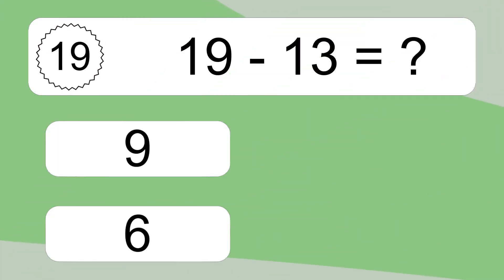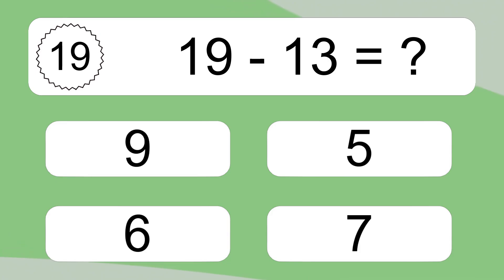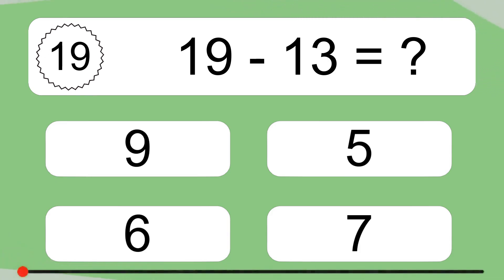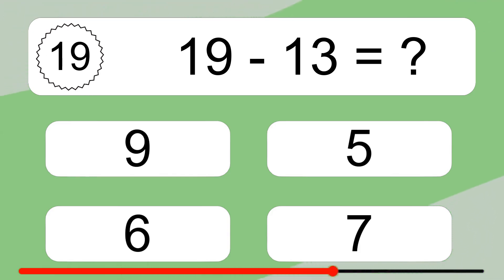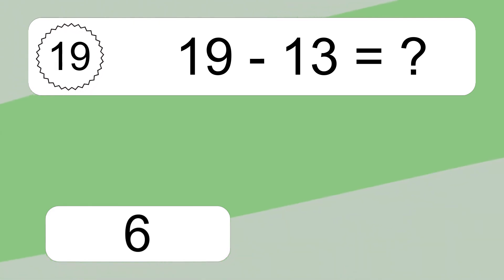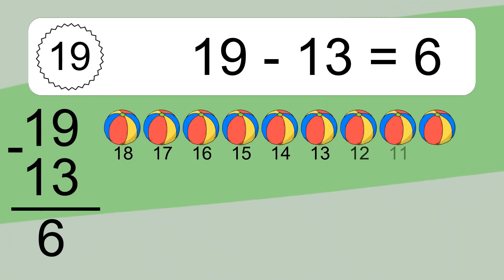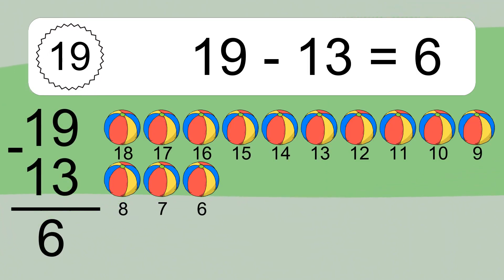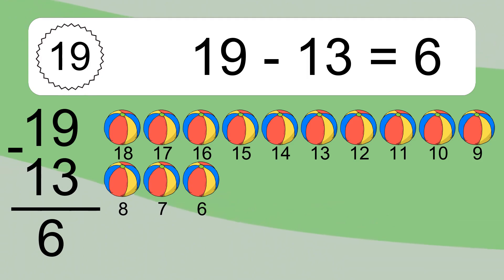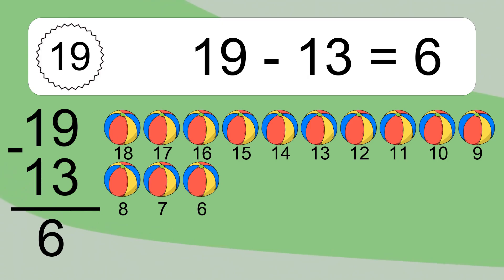19 minus 7 equals 12. Let's count it: 18, 17, 16, 15, 14, 13, 12, 11, 10, 9, 8, 7, 6.